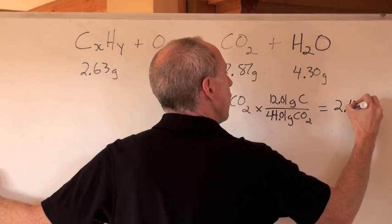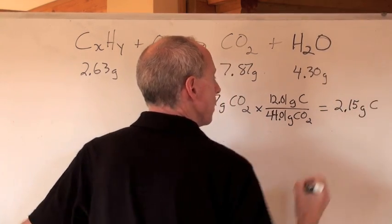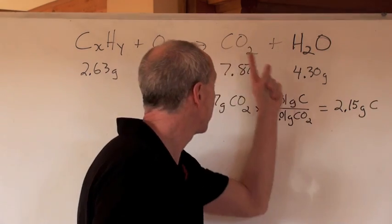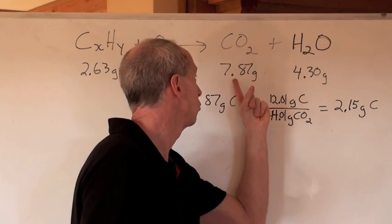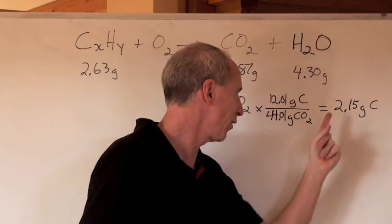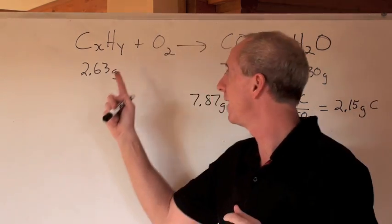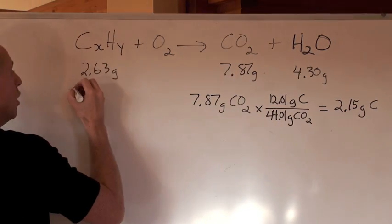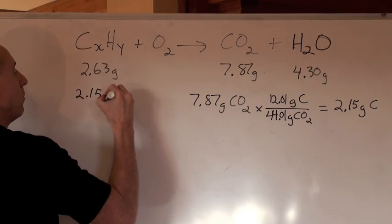Now, what have you got? You've got the mass of carbon that's in that carbon dioxide right there. That's how much carbon is in that mass there. But that's also how much carbon is here as well. So of this compound here, 2.15 grams of it is carbon.